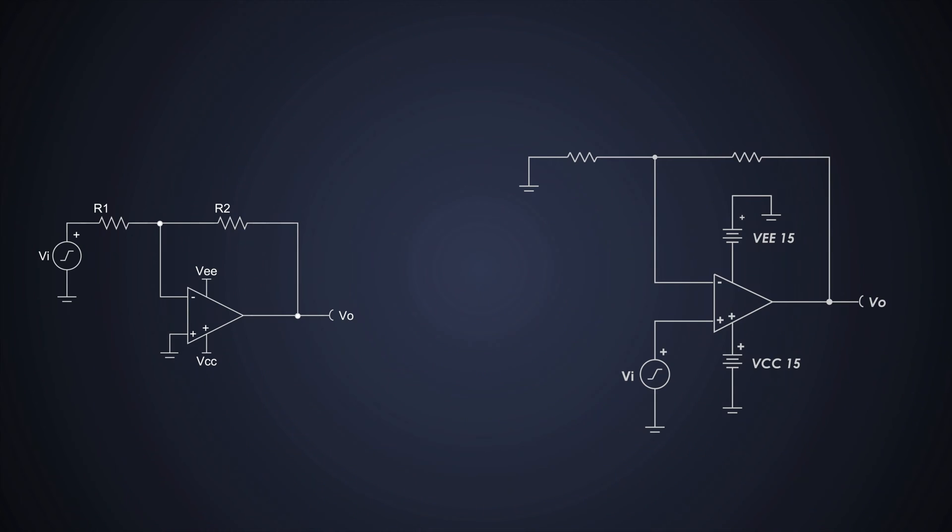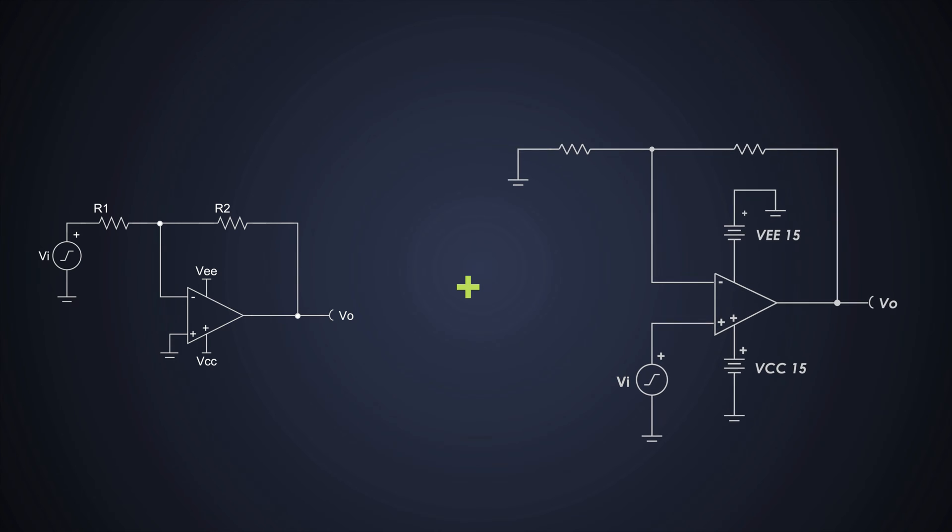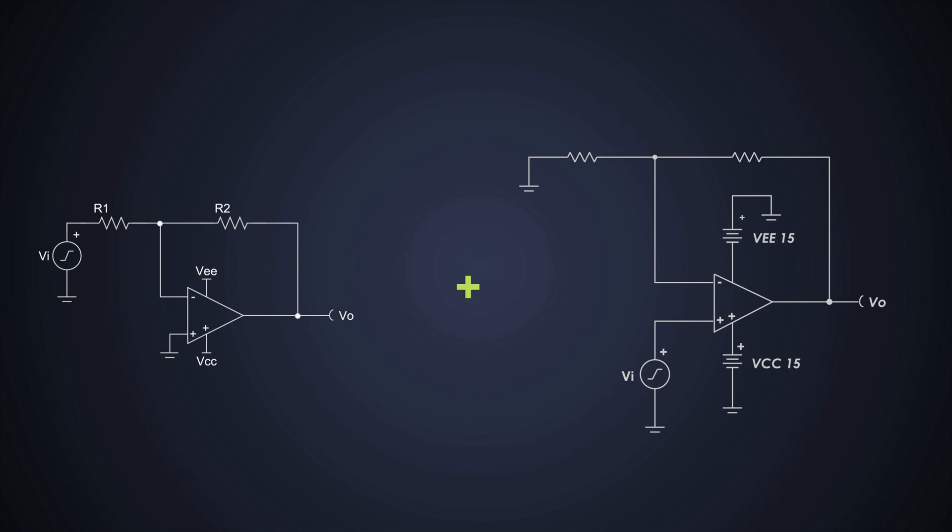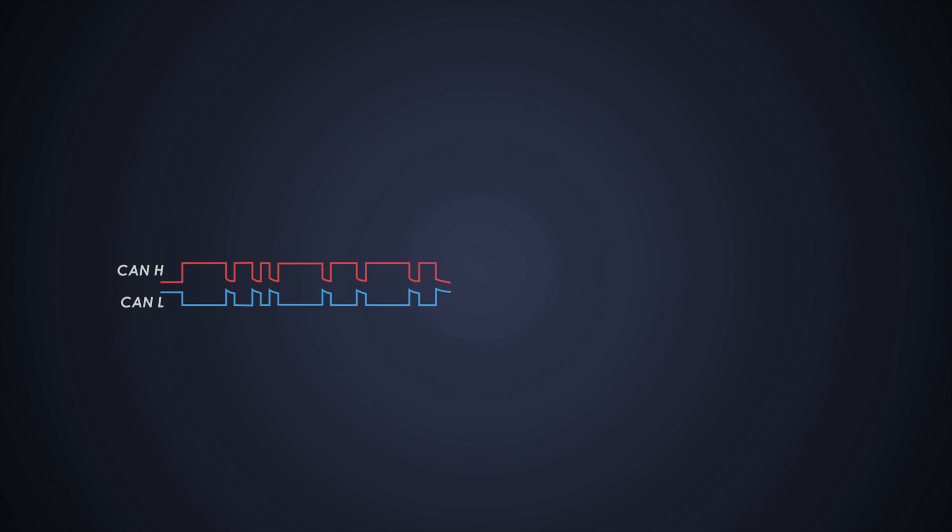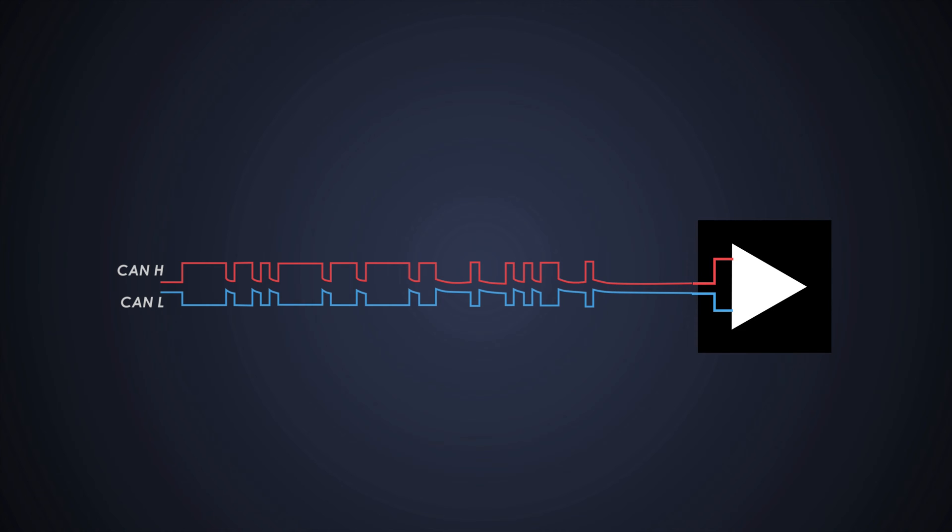Hello guys, today we are going to see an op-amp based amplifier circuit which is the combination of non-inverting and inverting amplifiers and mainly used to minimize the common mode noise and interpret the differential signals.